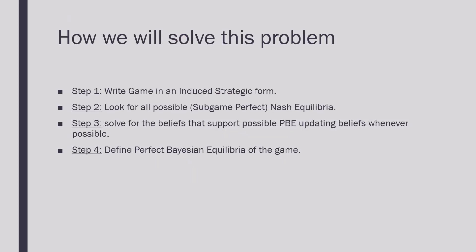The way that we're going to solve this game, as in our previous three examples, is that we're going to write this game in an induced strategic form. We're going to look for all possible Nash and subgame perfect Nash equilibria. We're then going to solve for the beliefs that support a possible Perfect Bayesian Equilibrium, updating those beliefs whenever possible, and then we're going to define the Perfect Bayesian Equilibrium of this game.